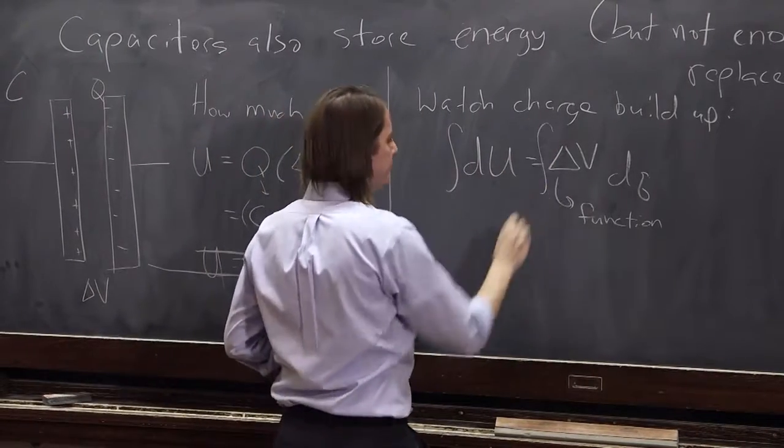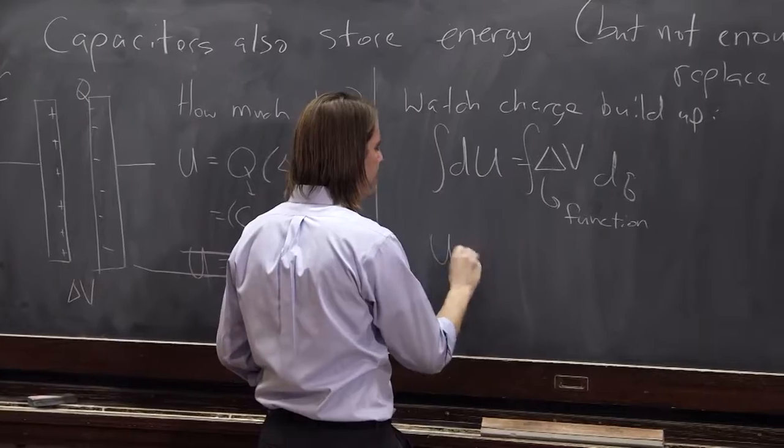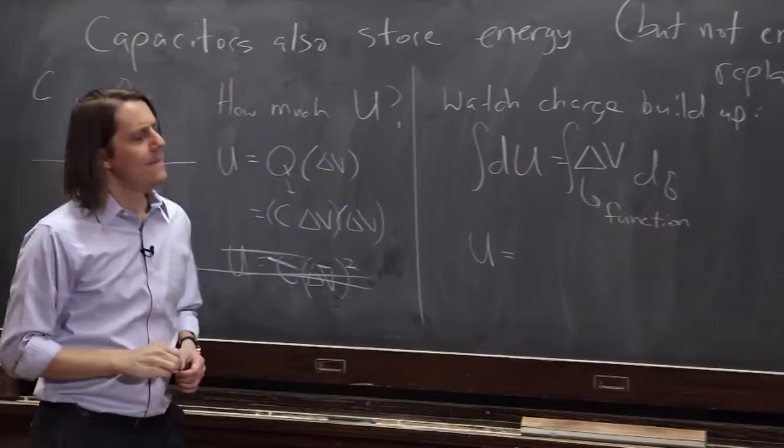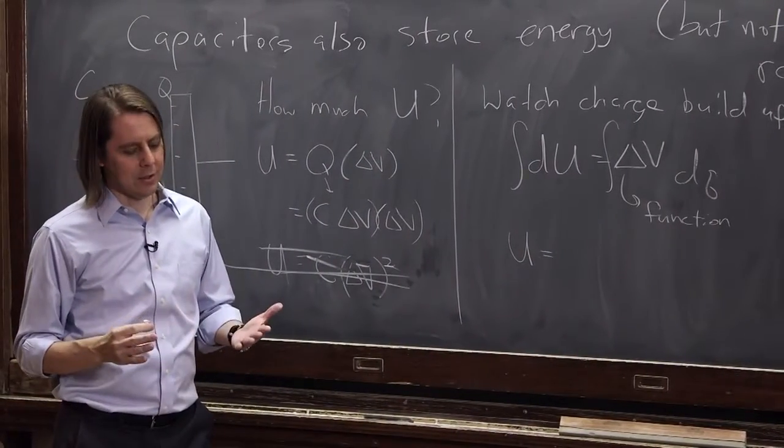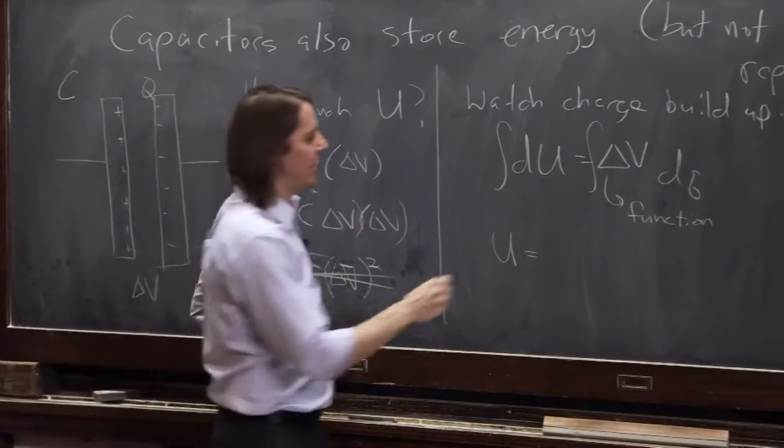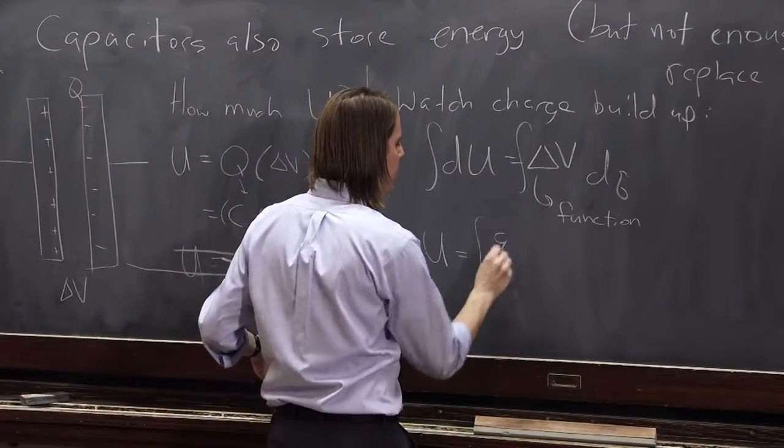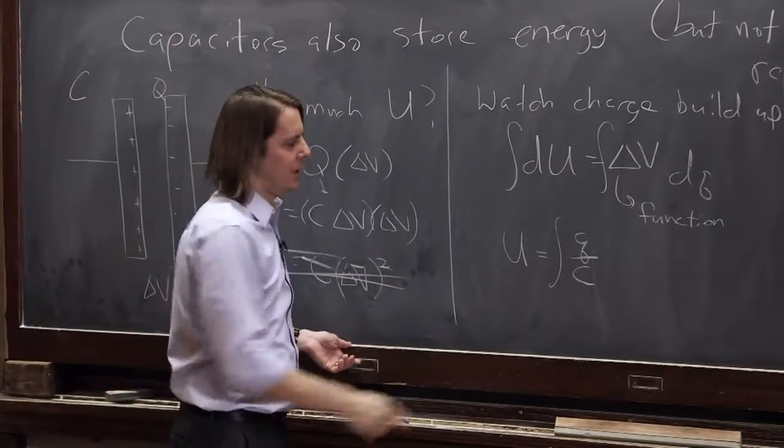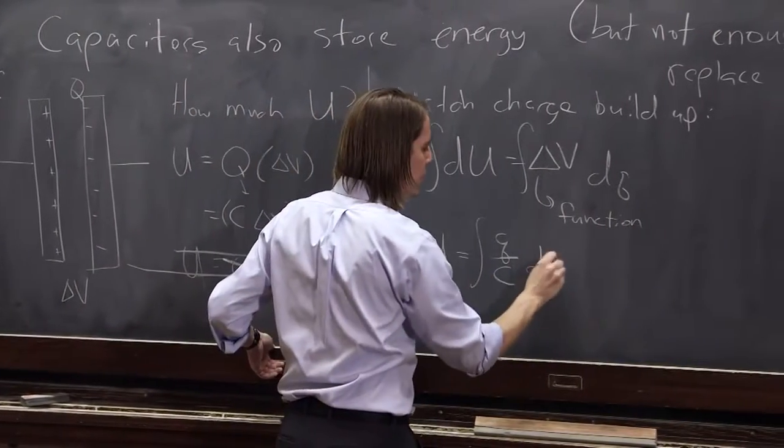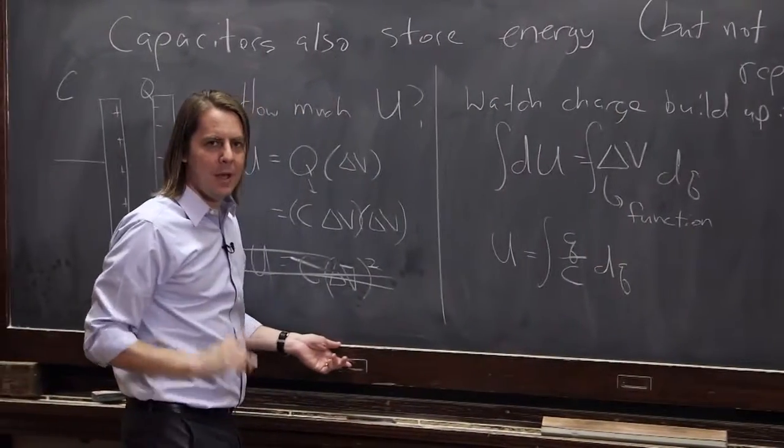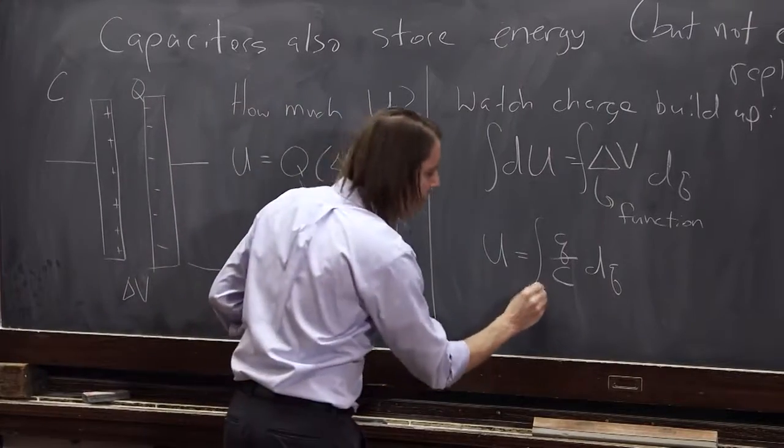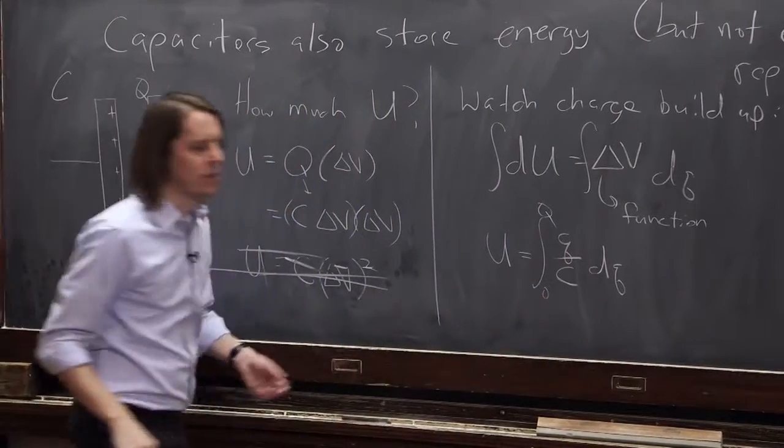So let's now put in the function and integrate. So we're going to integrate both sides. That's just going to give us U, the total energy. The function, delta V, is Q over C. It's how much Q you have, how much charge is on it over its capacitance. And I went to Q because I have a dQ here. And we're building up the charge all the way from zero to big Q, the amount of charge on the capacitor.